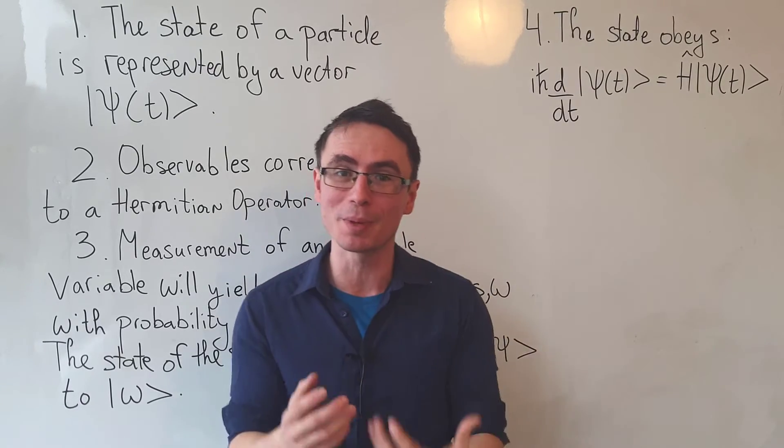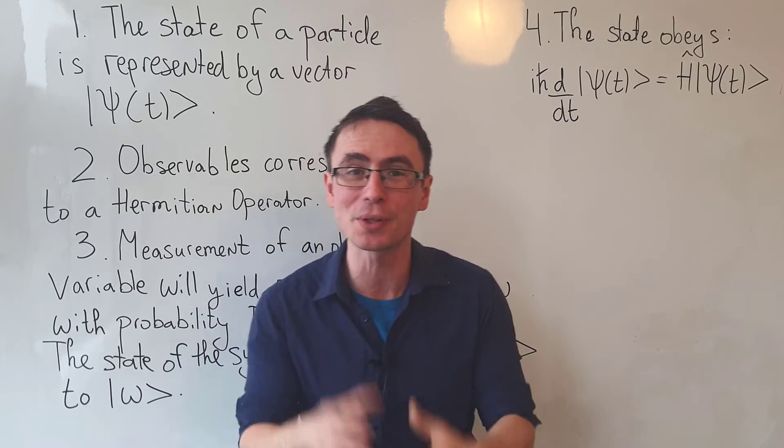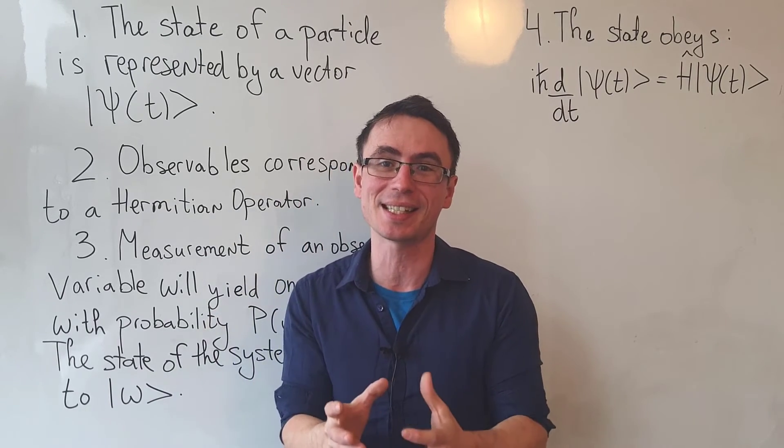If we decide to make a measurement with an operator, the state will collapse into one of its eigenvalues and will alter the existing state.